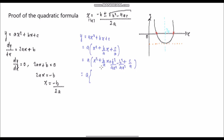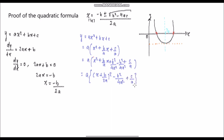Once we reach this stage, we can rewrite this as (x + b/2a)² — that's this part here. What's left is minus b²/4a². I'm going to multiply a back into the equation. So we get y = a[(x + b/2a)² − b²/4a²] + c, which simplifies to a(x + b/2a)² − b²/4a + c.